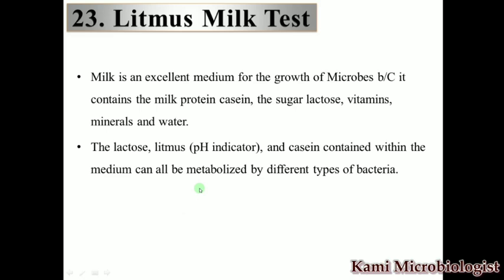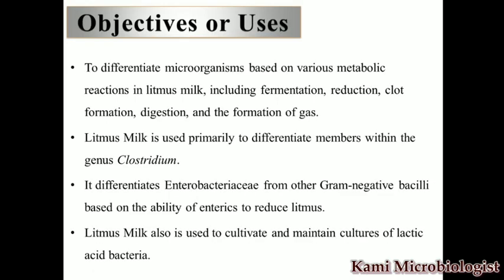The litmus and casein are the two things contained in this media that will be metabolized by different types of bacteria, and in this way we can identify them. This test is specially used to differentiate different types of bacteria based on their metabolic reactions in the milk — such as fermentation, reduction, clot formation, digestion, and curd formation — as every type of bacteria has unique properties.